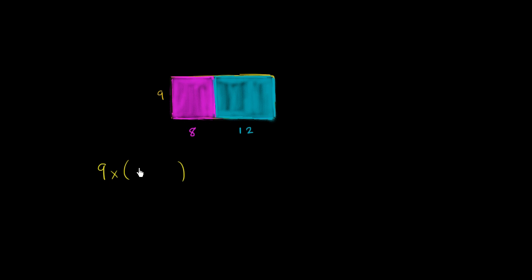So it's 9 times 8 plus 12. This is one way that we could figure out the area of this entire thing. This is just the length times the width. 8 plus 12 is obviously going to be equal to 20.